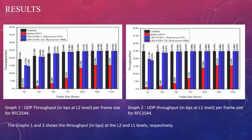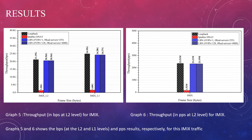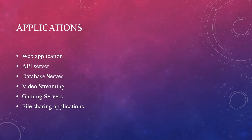Coming to the results: graphs 1 and 2 show throughput at L2 and L3 levels in BPS. Graph 3 shows the performance of each frame size for TCP traffic at L2 level, which is almost the same as graph 1. Graph 4 shows the result of graph 1 in terms of PPS. The proposed L2 level was only approximately 24% lower than the realistic maximum performance. When frame size was 128 bytes, the difference was only 3%, and performance is constant at larger frame sizes. In the worst case, the performance of L2 level was 16 times better. We also tested the LBN with IMIX. Graphs 5 and 6 show BPS and PPS results for IMIX traffic, where the proposed LBN was 27 times better. Applications of our load balancer include web applications, API servers, database servers, video streaming, gaming services, and file sharing applications.